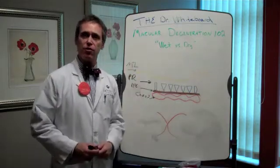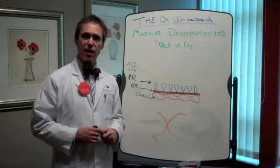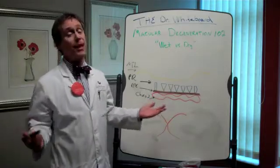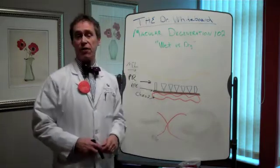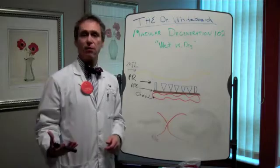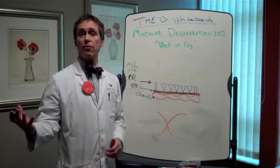If you've done any research about macular degeneration, read anyplace, you see these terms all the time. What does it mean? Basically, it's really simple. If you have wet macular degeneration, there's bleeding involved. If you have dry macular degeneration, there's no bleeding involved.